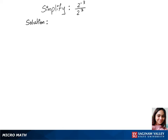To simplify 2 to the power minus 3 over 2 to the power 3, we'll use the quotient rule. Using the formula, the base is 2 and we subtract the powers: minus 3 minus 3, which gives us 2 to the power minus 6. This can further be written as 1 over 64, and that's our answer.